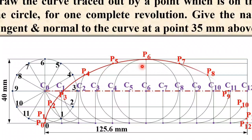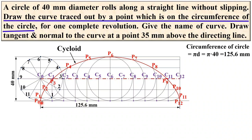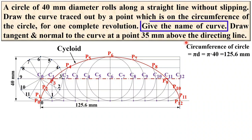So far we have completed the first task: draw the curve traced by point P on the circumference of the circle for one complete revolution. For the second task — give the name of the curve — since the rolling circle rolls on a straight line, it is definitely cycloid. That is your second answer.